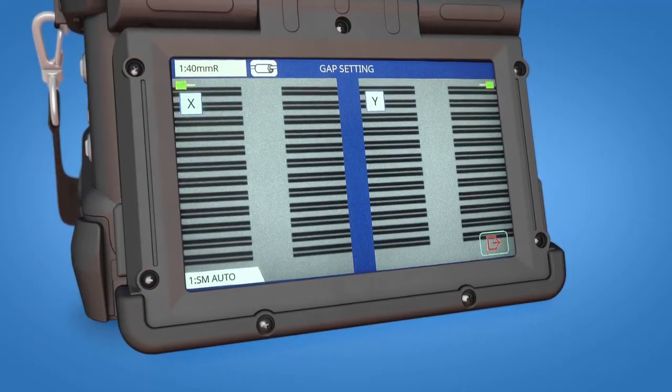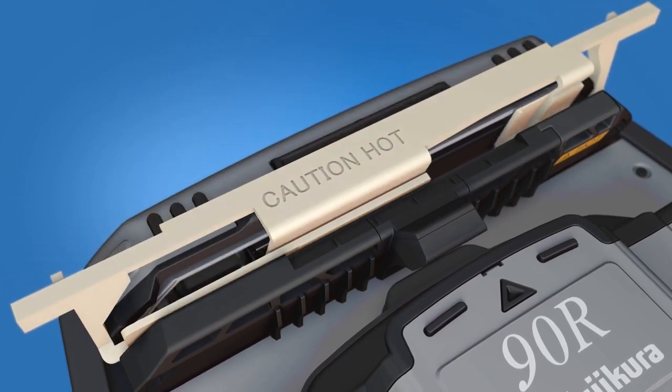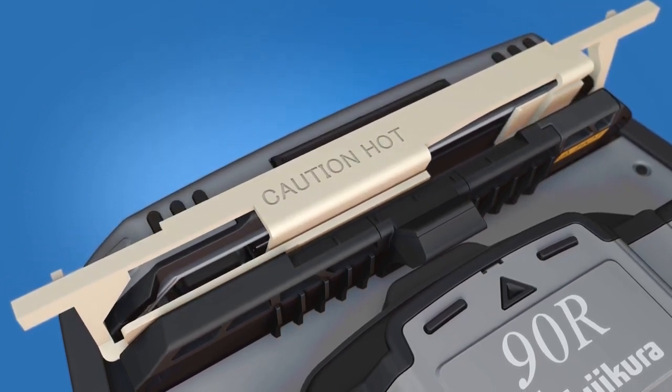Splice on the Fuse Connect MPO connector. Place the provided heater attachment in the heater oriented where you can read CAUTION! HOT!